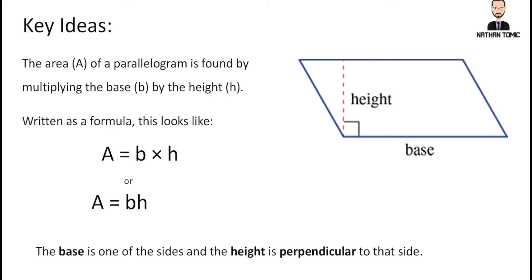The base is one of the sides — it doesn't technically matter which one you choose; normally choose one that's convenient. The height is the important part: the height must be a measurement that is perpendicular to the side you choose as the base. Perpendicular means it has to be at a 90-degree angle. Here is our base — the bottom one — and the height is perpendicular to it at 90 degrees.